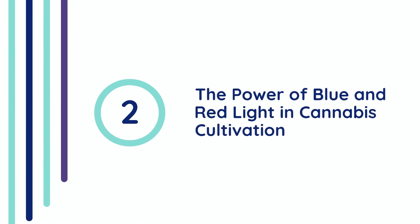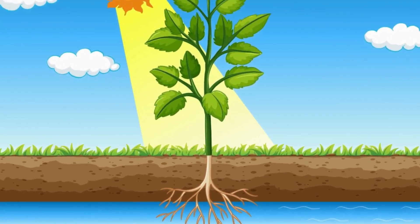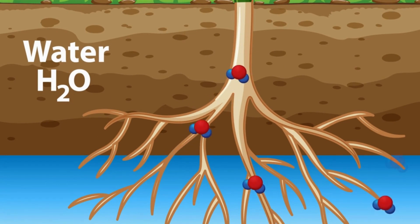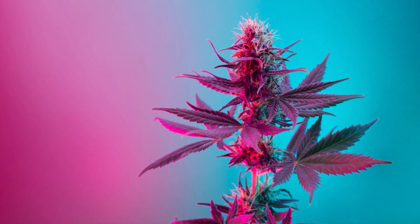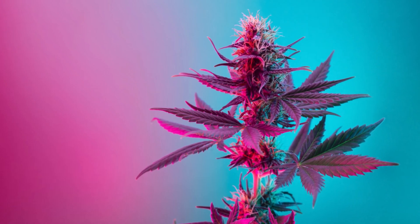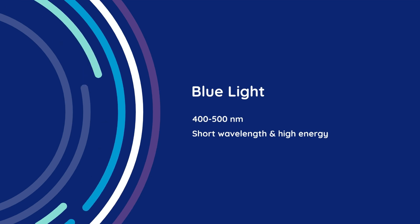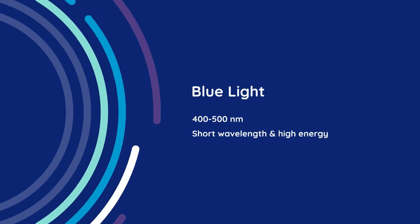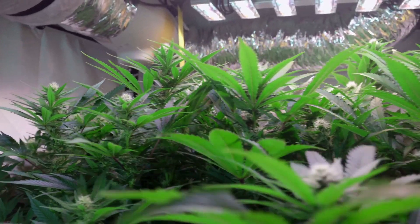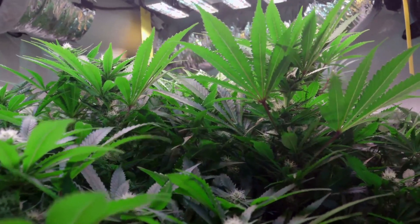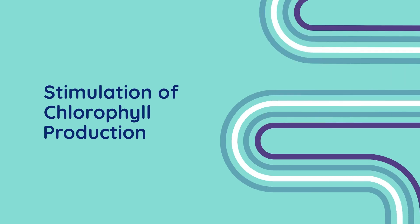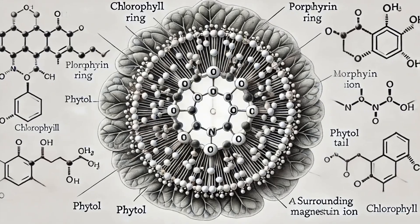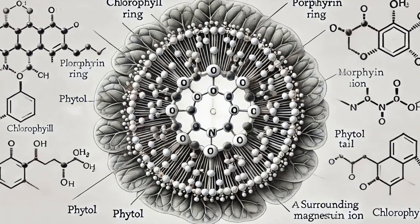Chapter 2: The Power of Blue and Red Light in Cannabis Cultivation. The effects of blue and red lights on cannabis plant growth are rooted in the principles of photosynthesis and plant biology. Each color of light influences specific plant functions, and understanding this can help growers optimize their lighting setup to promote healthy growth and high yields. Blue light falls within the range of 400 to 500 nanometers on the light spectrum and has a short wavelength and high energy. It plays a crucial role during the vegetative growth stage, stimulating chlorophyll production — the pigment responsible for capturing light energy and converting it into chemical energy through photosynthesis — which enhances the plant's ability to capture energy and grow vigorously.